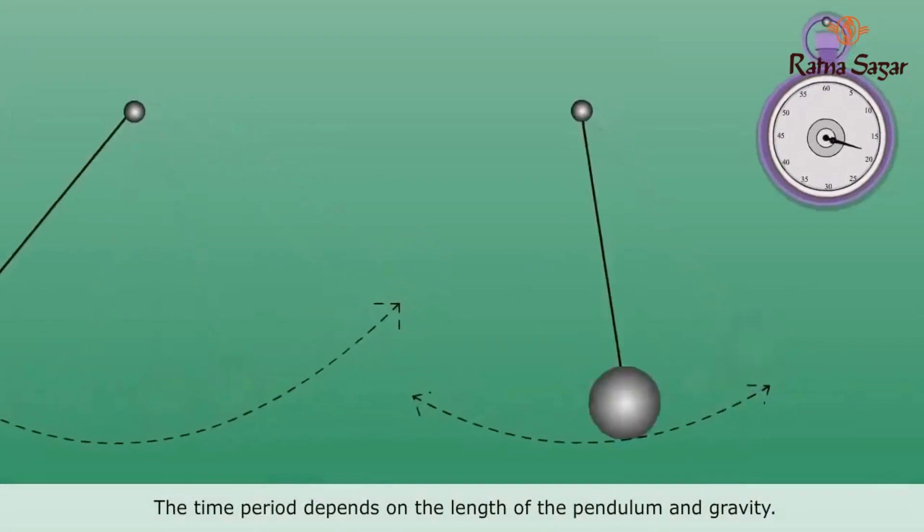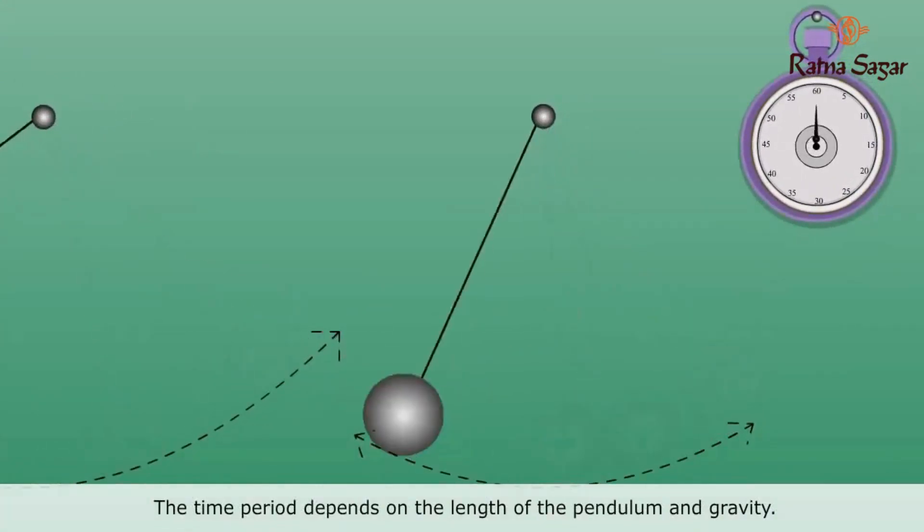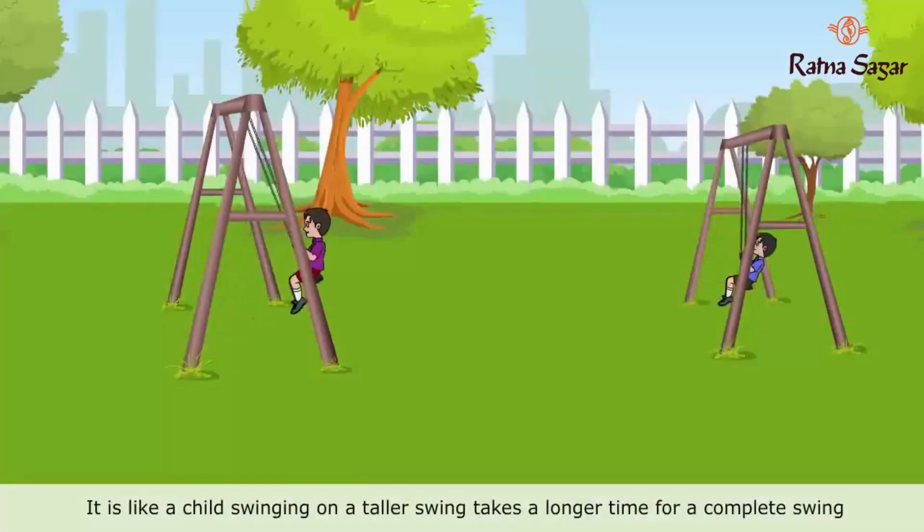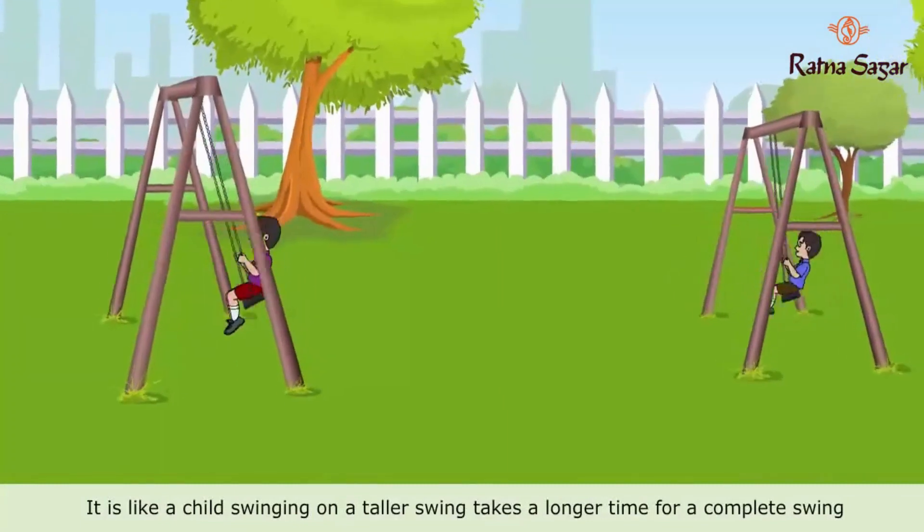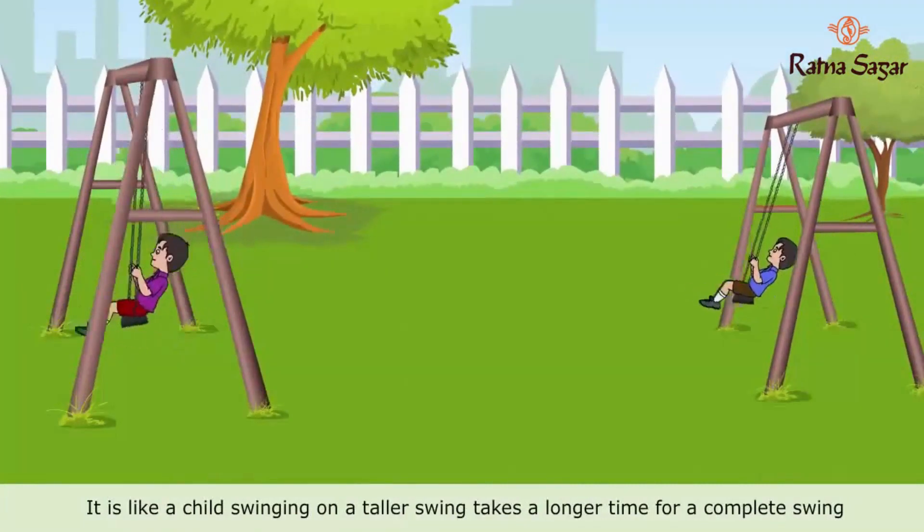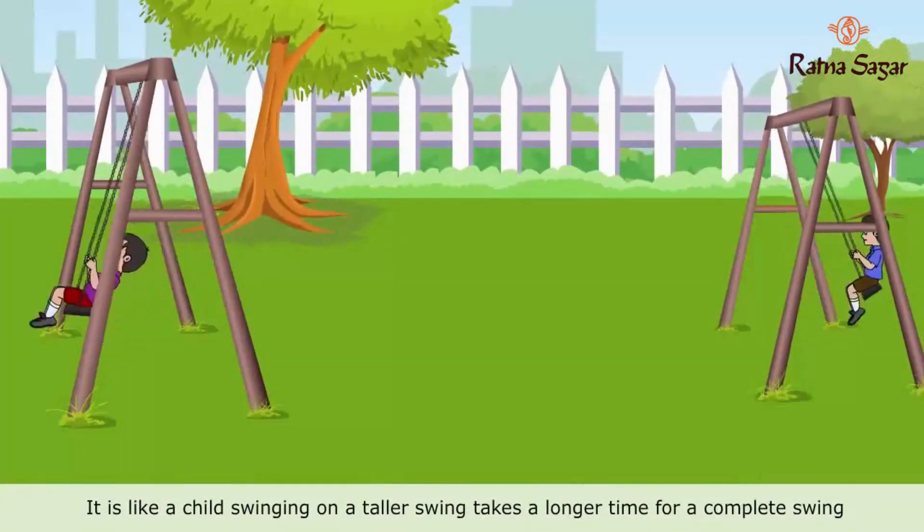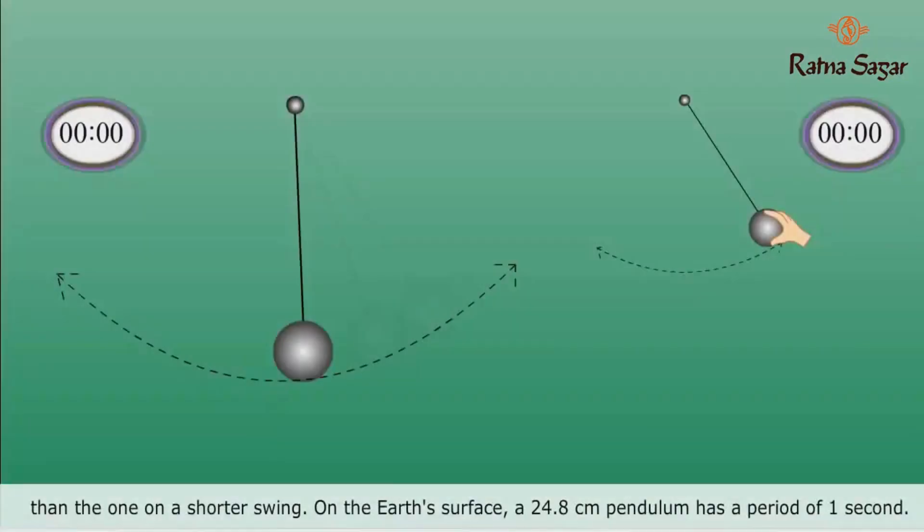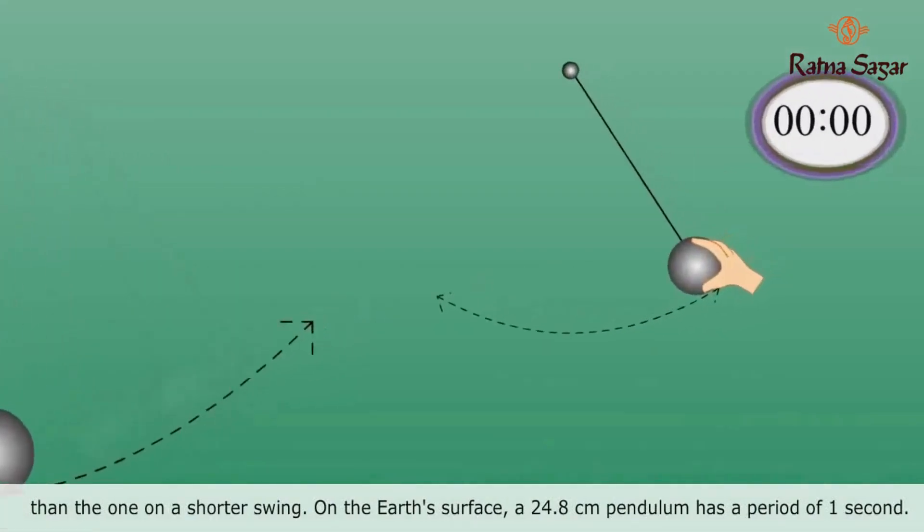The time period depends on the length of the pendulum and gravity. It is like a child swinging on a taller swing takes a longer time for a complete swing than the one on a shorter swing. On the earth's surface, a 24.8 cm pendulum has a period of one second.